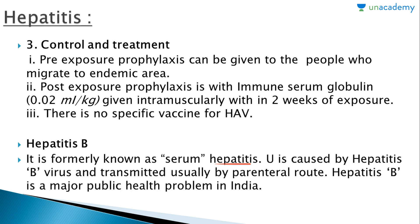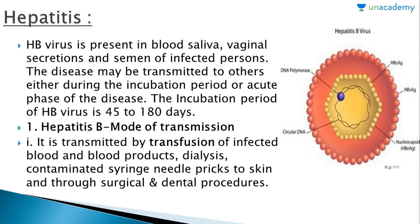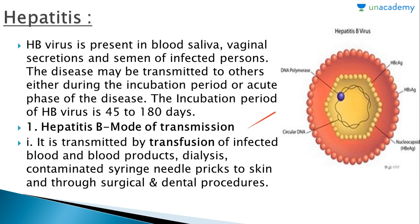Hepatitis B is formerly known as serum hepatitis. It is caused by hepatitis B virus and transmitted usually by the parenteral route. Hepatitis B is a major public health problem in India. Hepatitis B virus is present in blood, saliva, vaginal secretions, and semen of infected persons. The disease may be transmitted during the incubation period or acute phase. The incubation period of hepatitis B virus is 45 to 180 days.